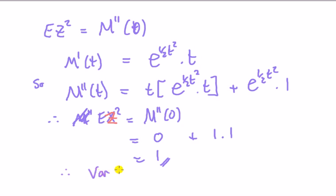Therefore, variance of z is equal to, since variance of z equals the second moment of z minus the first moment of z all squared, we can plug those in now.